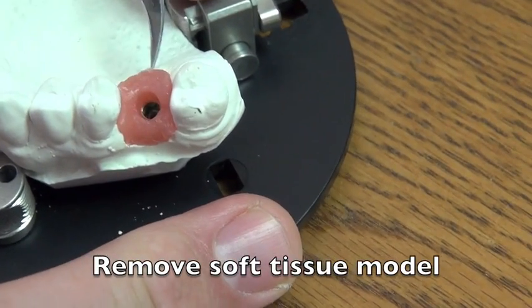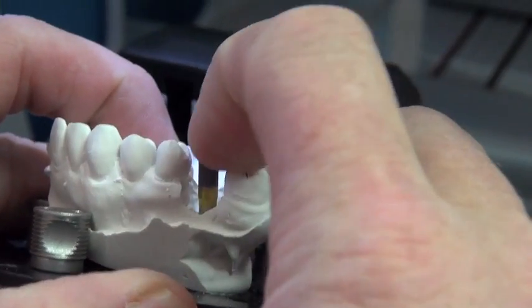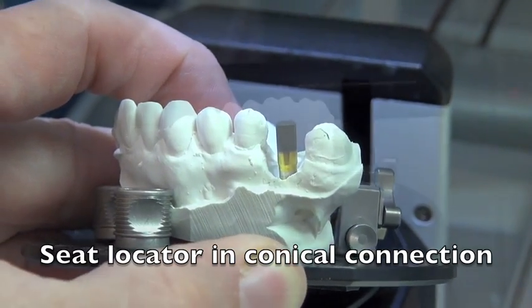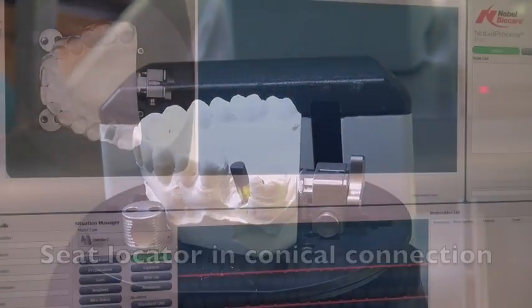We prepare the model by removing the soft tissue model to expose the replica because we want to get in there with the locator for scanning. So we put the locator on the replica, snap it down to make sure it's in place, and then we're going to take this to the scanner.